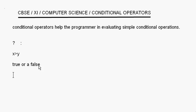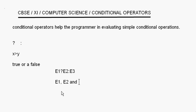Depending on whether the result is true or false, a suitable action is taken. There are three expressions in the syntax: expression 1, then a question mark, then expression 2, a colon, and then expression 3. E1, E2, and E3 are all expressions.